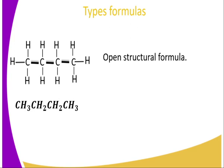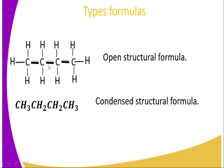We also have the condensed structural formula. The first carbon has three hydrogen atoms bonded covalently, hence CH3. The second carbon has two hydrogen atoms, giving CH2, and the third carbon likewise gives CH2. The last carbon in butane has three hydrogen atoms, therefore CH3. That gives us the condensed structural formula.